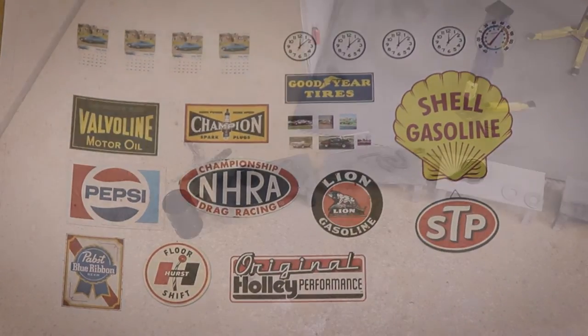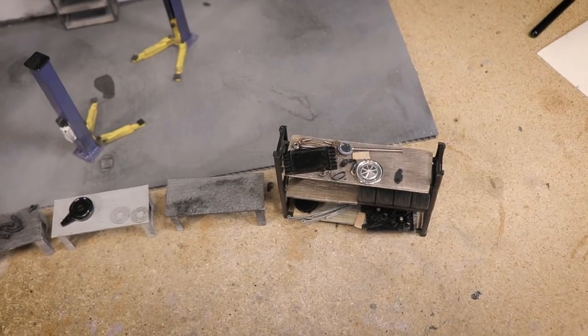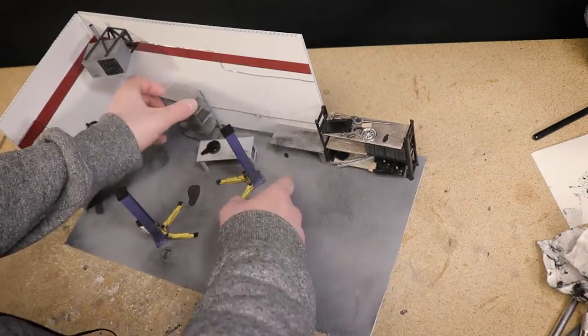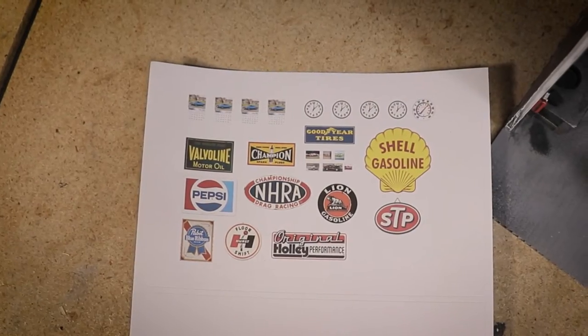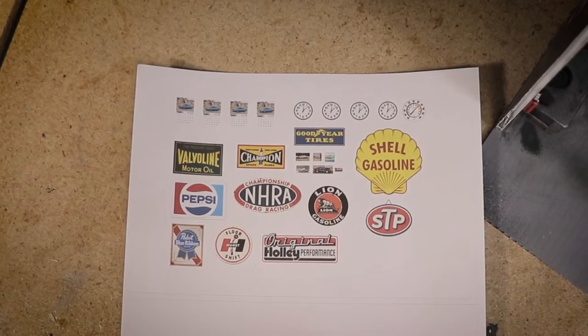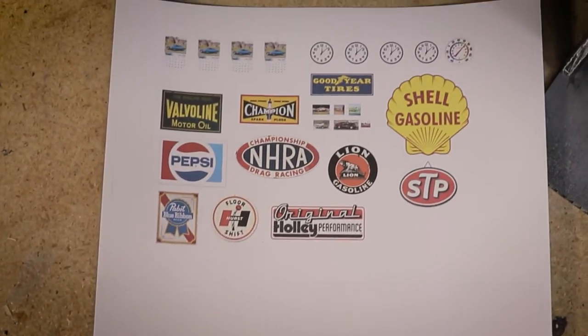Before I add them though, I put in all of the accessories that go along the wall. That will help me determine where I want to place each sign without them being blocked from view, which wouldn't look right. The signs, as well as some other details like a clock and calendar, were simply printed on white label making paper.